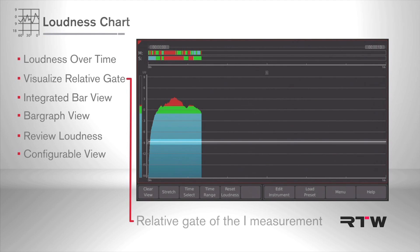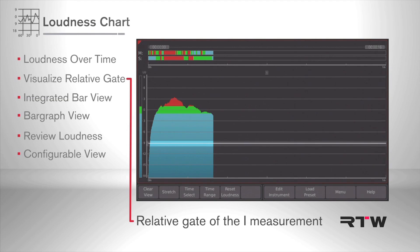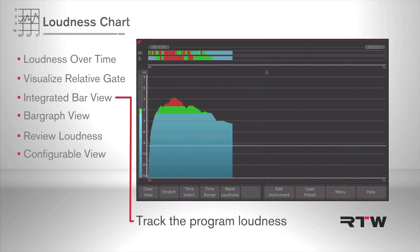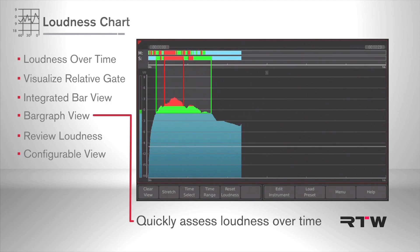The visualization of the relative gate function for the integrated loudness measurement supports sound engineers. On the left-hand side, a permanent bar view reads the integrated program loudness value. The top line bar graph makes it easy to assess the status of up to 4 parameters.